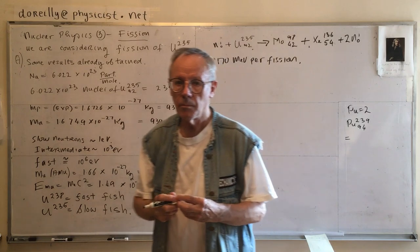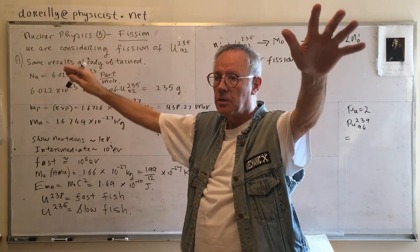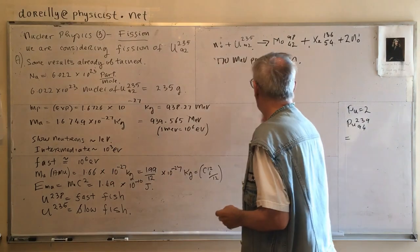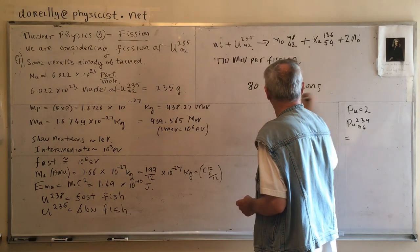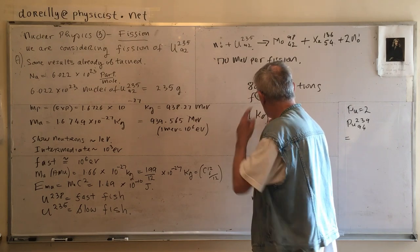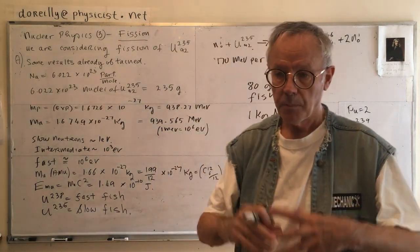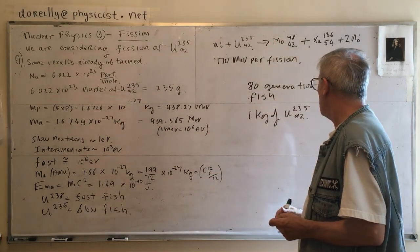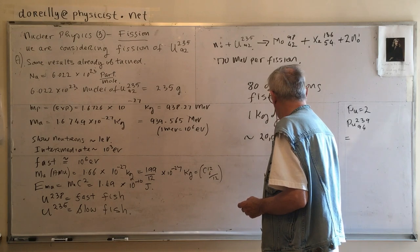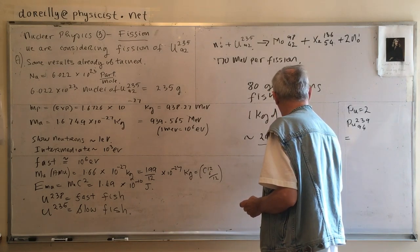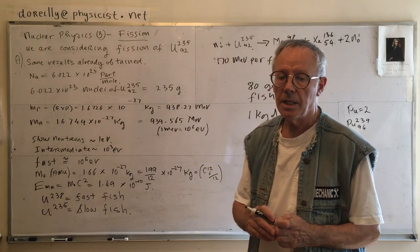We also get xenon-136-54 and two neutrons. To get a chain reaction, we need more than one neutron, and we get two — so two neutrons go on and fission two more nuclei, then you get four nuclei fissioned. It's powers of two, and we call those generations. It takes 80 generations of fission events like this to fission one kilogram of U-235-92, giving an energy of 20,000 tons of TNT.